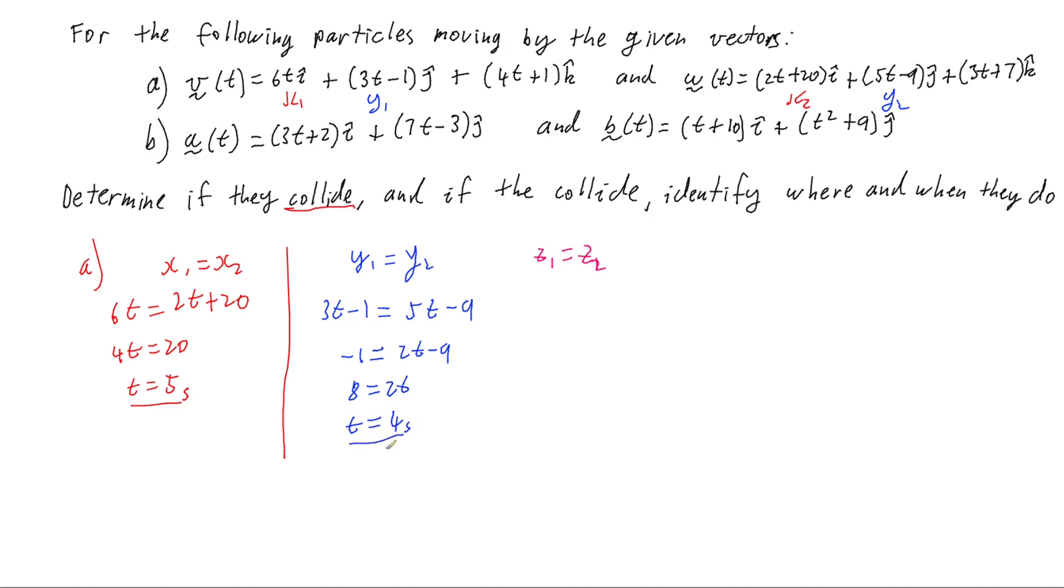So the y's are the same at 4 seconds, but the x's are the same at 5 seconds. These two solutions do not match. And because they do not match, that means that the two particles V and W do not collide. The particles may cross, we haven't proved that one way or the other, but they don't collide. They don't cross at the same time.